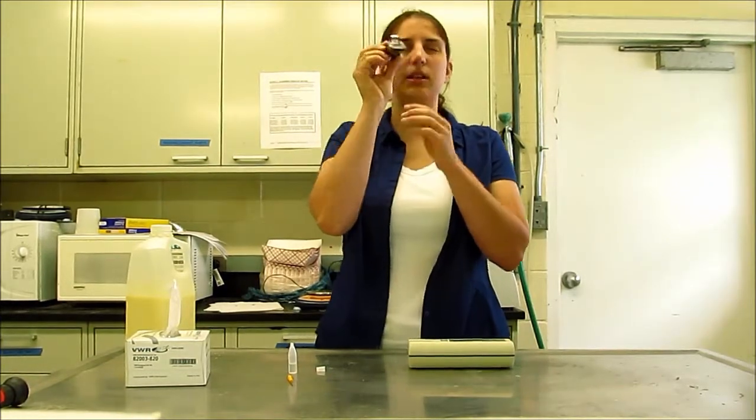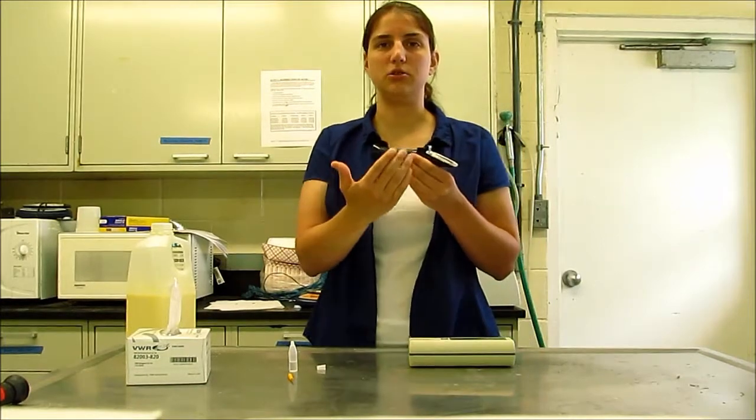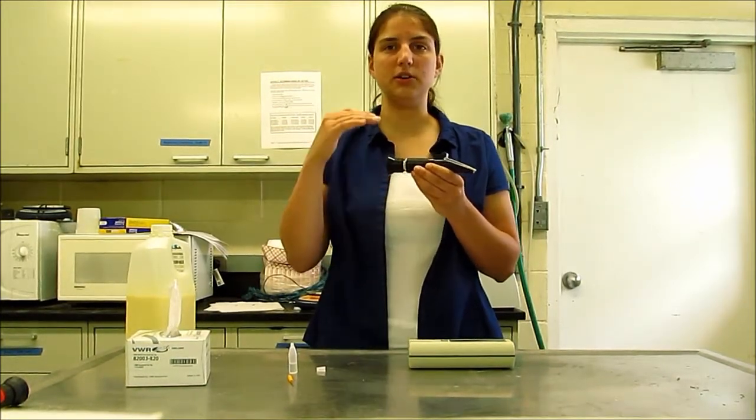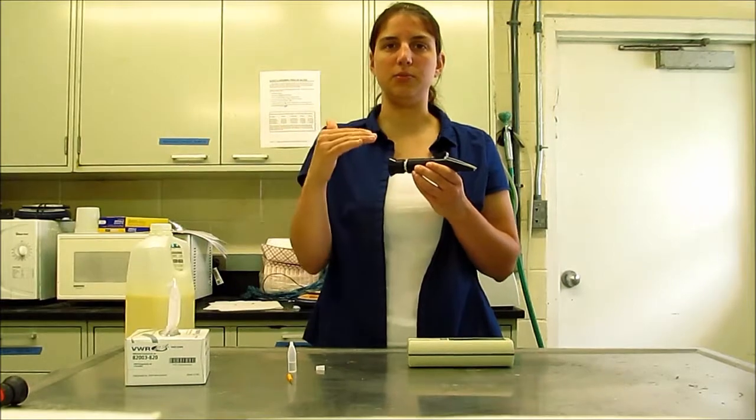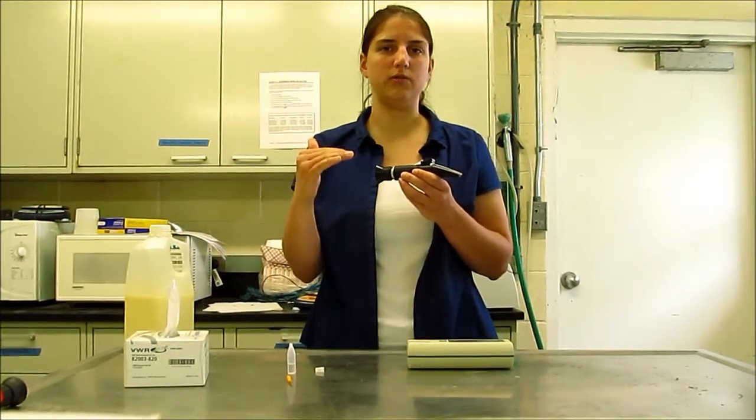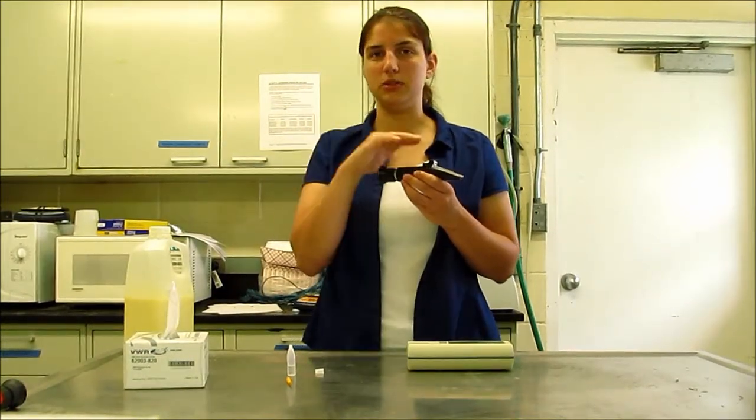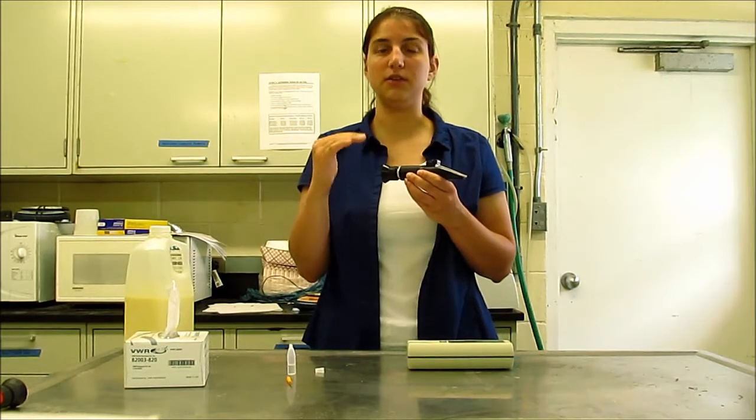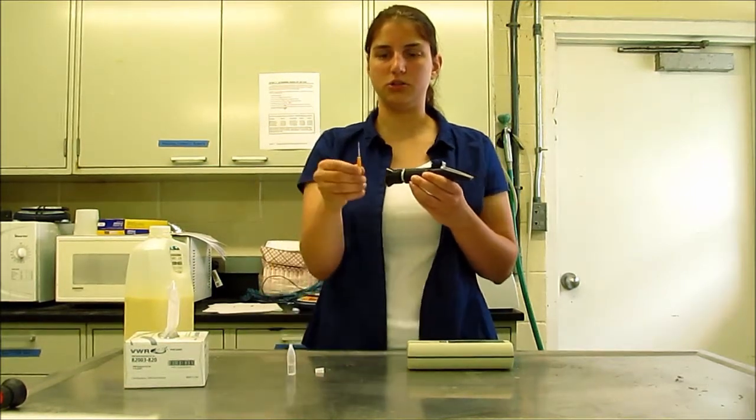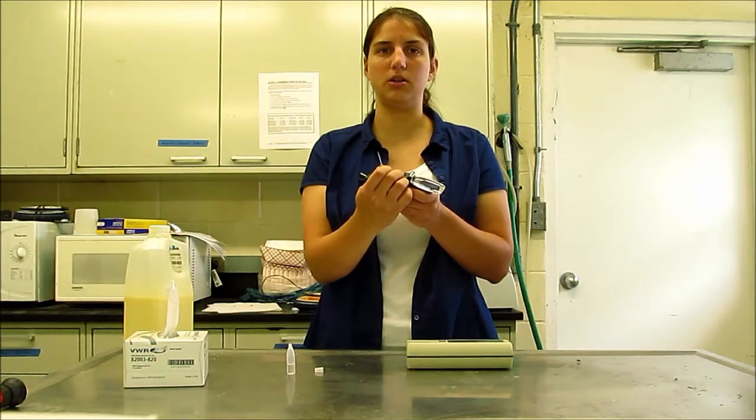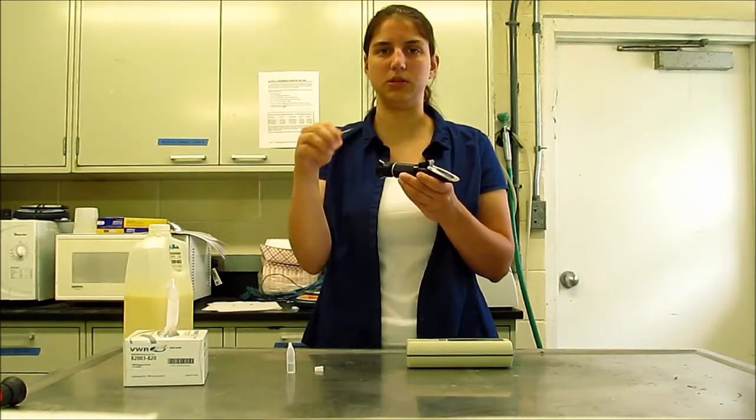You'll want to do this in an area that is well-lit so that you can clearly see. What you're looking for is the interface between a blue region and a clear or white region, and that line between those two colors should be right at zero. If not, use a small screwdriver and turn the screw one way or the other to adjust that line to be at zero.